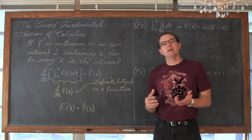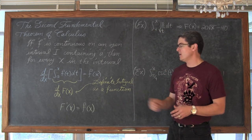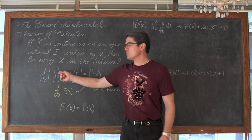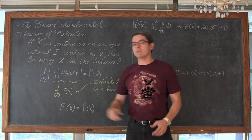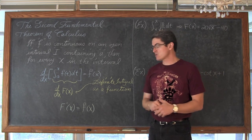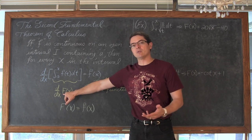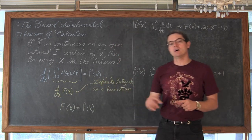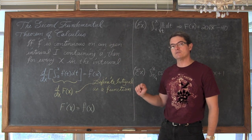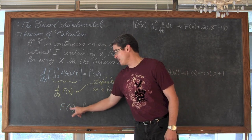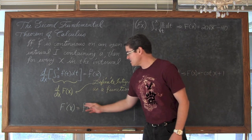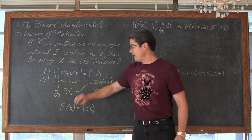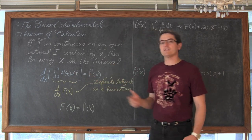What we are going to do to show that this actually works is use three of our four examples from our previous video on definite integrals as a function. We got definite integrals that were a function because we did definite integrals that had an upper bound — or upper and lower bounds — which were not just simple constants, they were algebraic expressions. Through that process we got an anti-derivative, capital F, in terms of x. So we should be able to take the derivative with respect to x of those answers from the previous video and see that the derivative of those capital F anti-derivatives is equal to f.